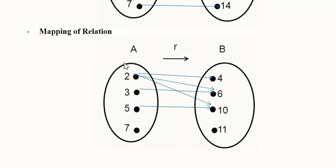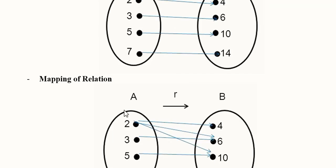In a relation, 2 gives rise to 4, as well as to 6, as well as to 10. From the very first element of the domain we can see it is a relation, because one member of the domain can give rise to multiple values of the range. Then 3 leads to 6 and 5 leads to 10, but the very first element has already shown that we are talking about a relation.